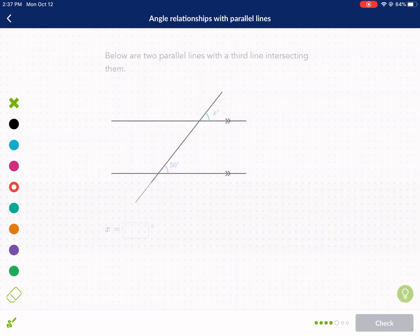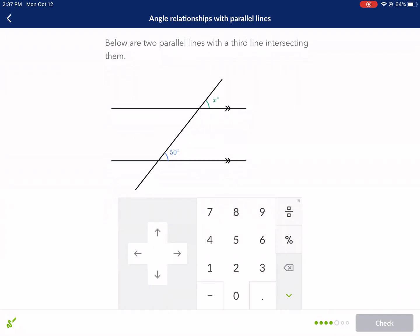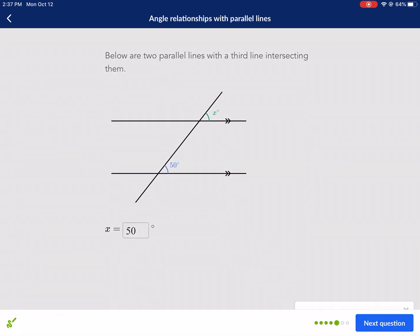Again, corresponding, we have the same portion of the intersection. Look at the intersection here. These are both in the upper right, upper right. I know it looks like I'm writing your, but I'm just referring to the upper right portion of the intersection. So these are the same angle. This is like the bread example. So we get 50 degrees here. I hope you guys are getting the pattern.